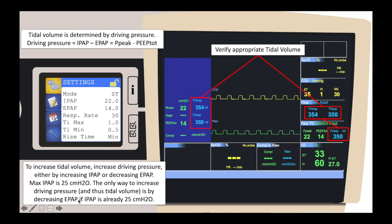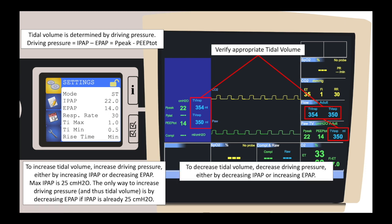Changes should be done in small increments of 3 to 5 centimeters of water at a time. On the other hand, if the delivered tidal volume is too high — say more than 6 to 8 milliliters per kilogram of ideal body weight — the driving pressure needs to be decreased. This can be done either by decreasing the IPAP or increasing the EPAP, making that difference smaller. The guidelines recommend changing those values by no more than 3 to 5 centimeters of water pressure at a time.